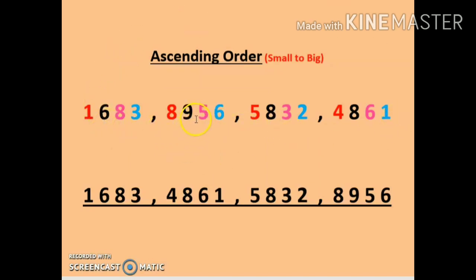Here are 4 numbers. First of all, kindly count the number of digits: 1, 2, 3 and 4. All four numbers have 4 digits each.